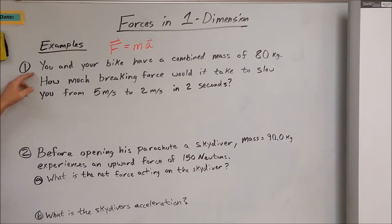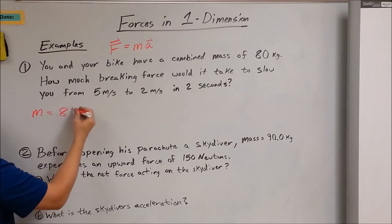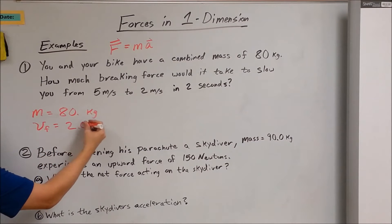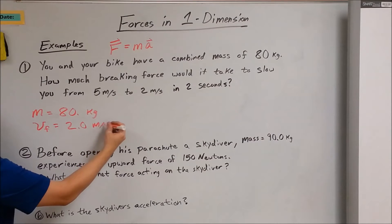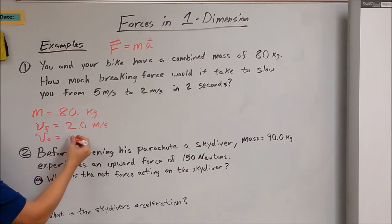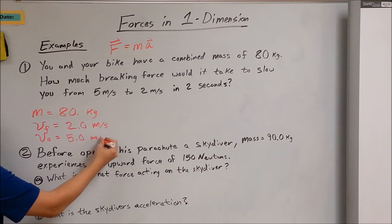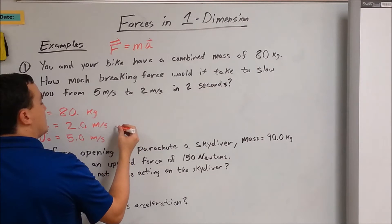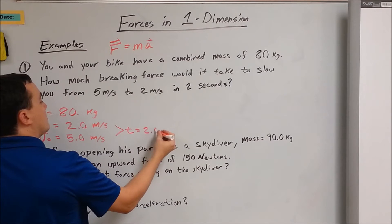So number one: you and your bike have a combined mass of 80 kilograms. So M equals 80 kilograms. How much braking force would it take to slow you from 5 meters per second to 2 meters per second? So we know VF is 2.0 meters per second, V0 was 5 meters per second, and we want to know the force. We also know time is 2 seconds.